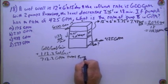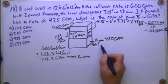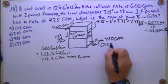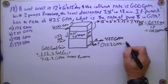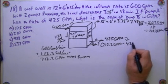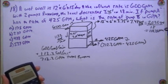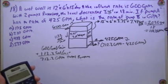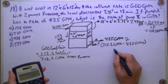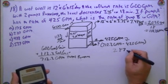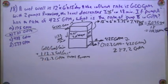So what this guy is going to be, 712.2 GPM minus this pump, 425 GPM. That's going to give me 287.2 GPM, which is going to be B.